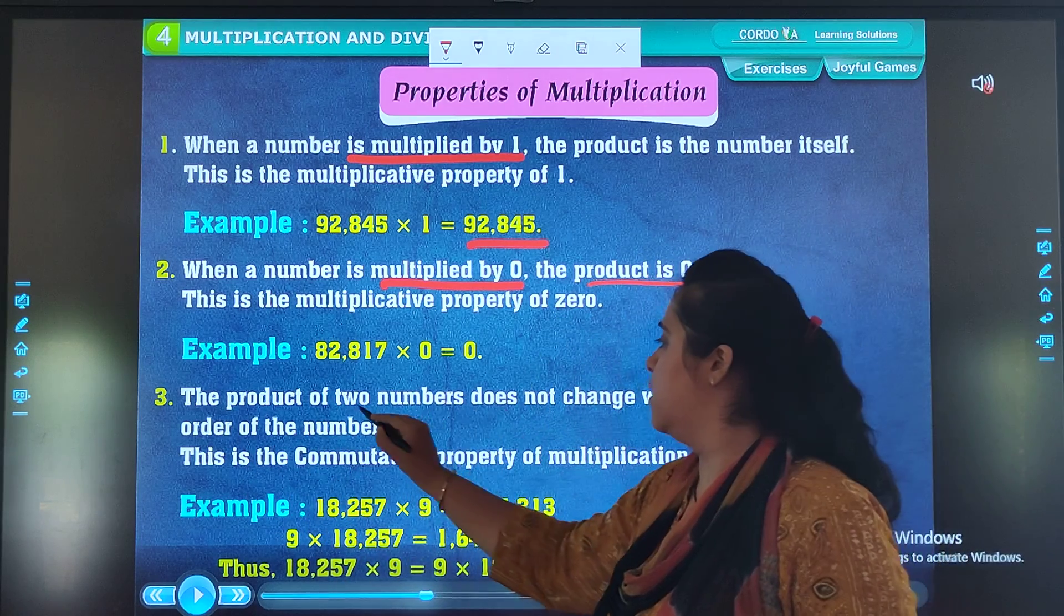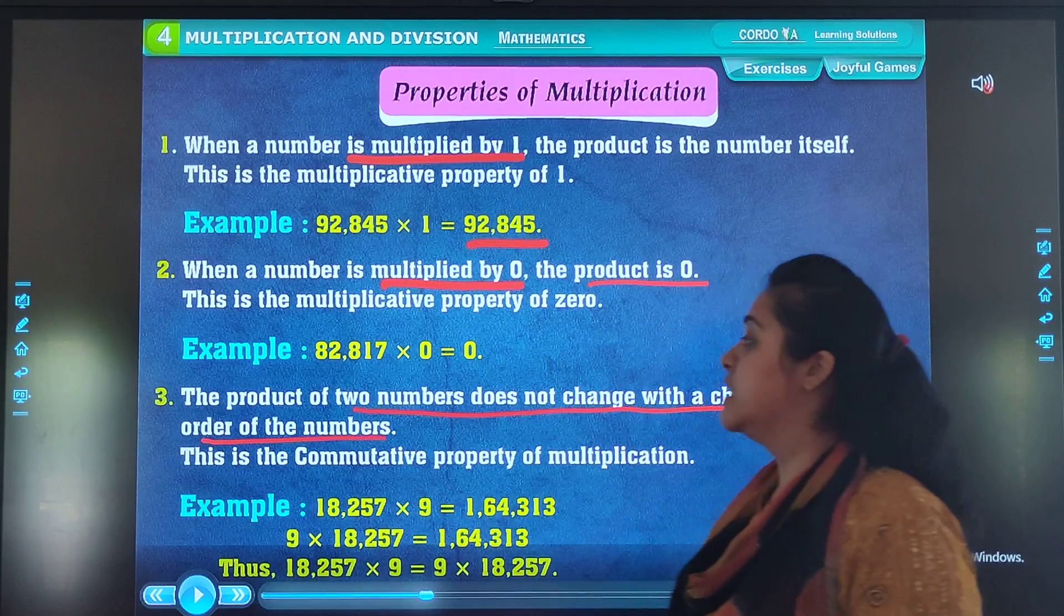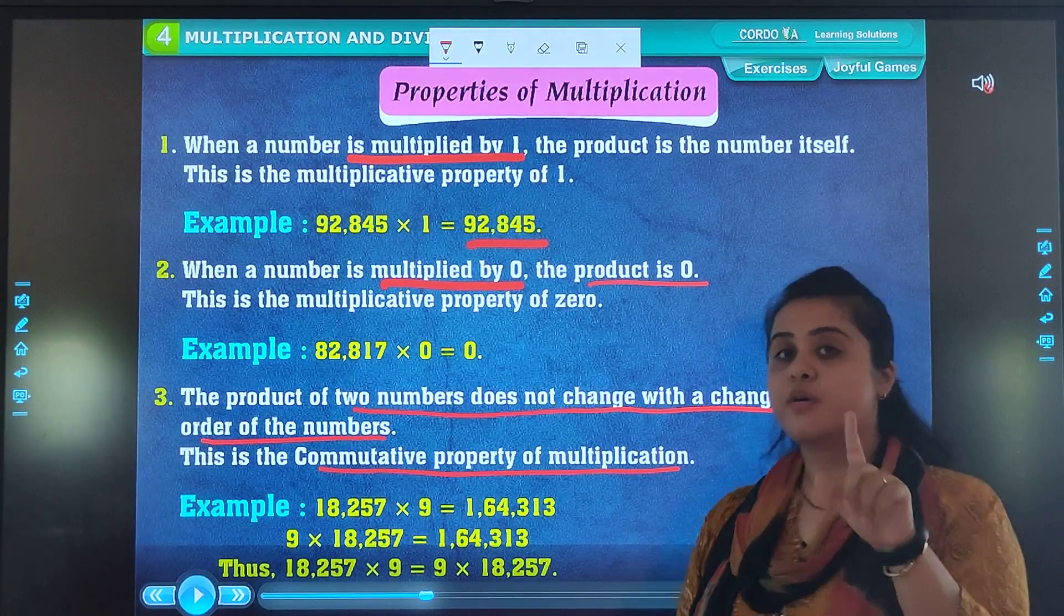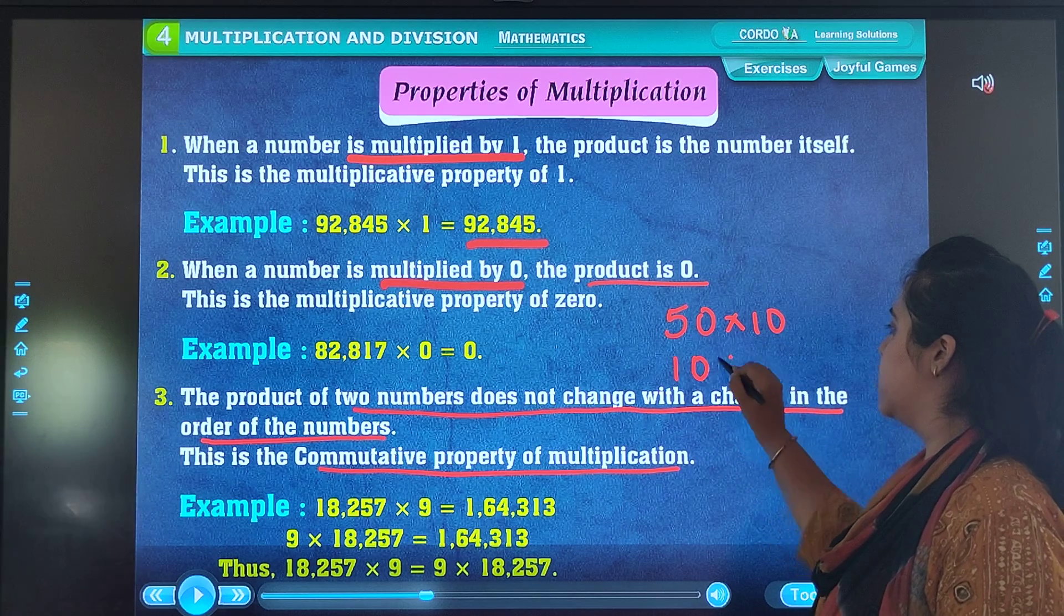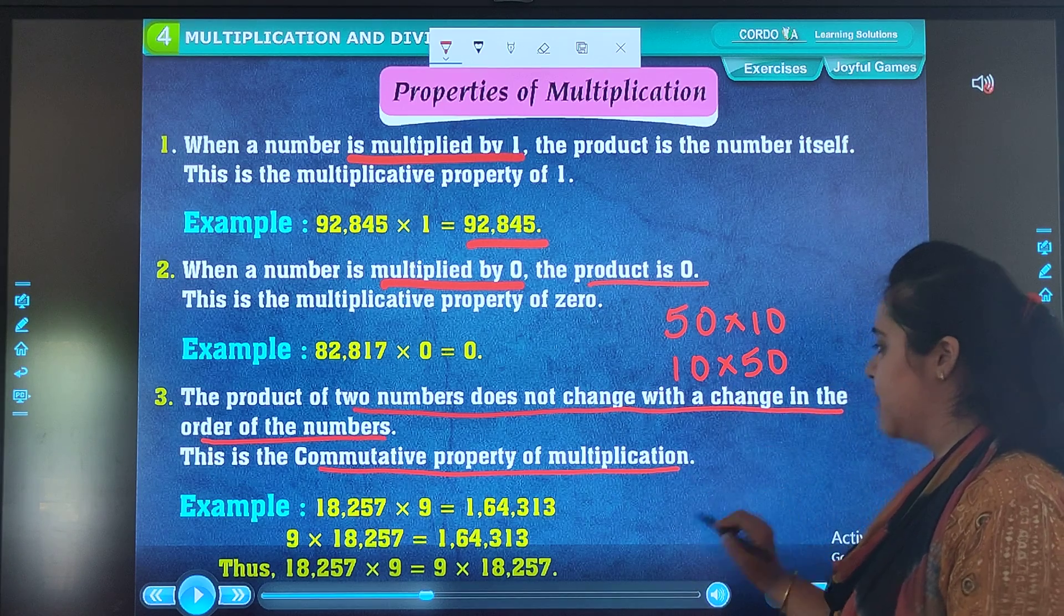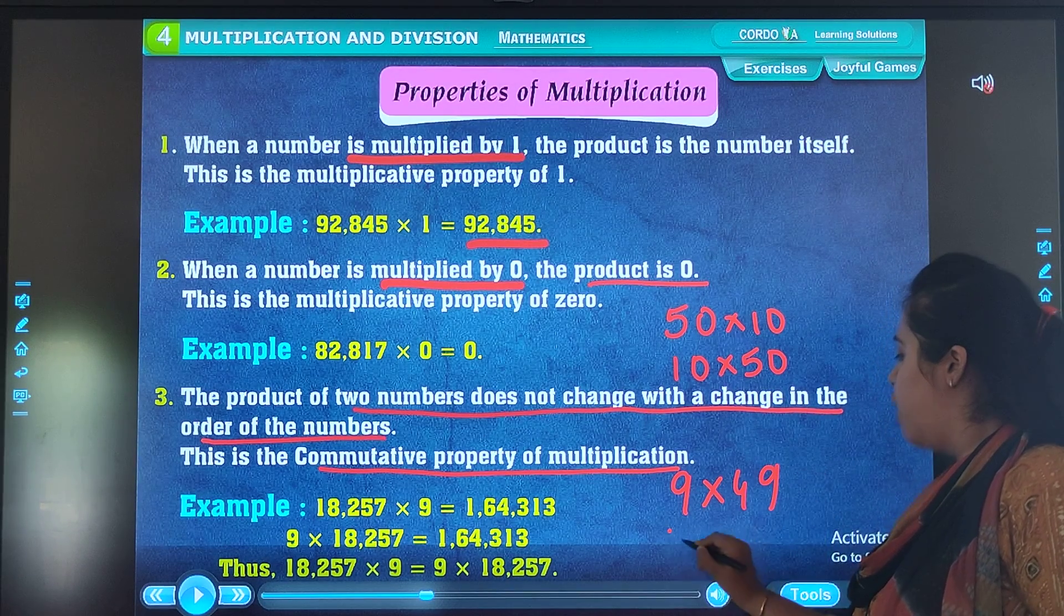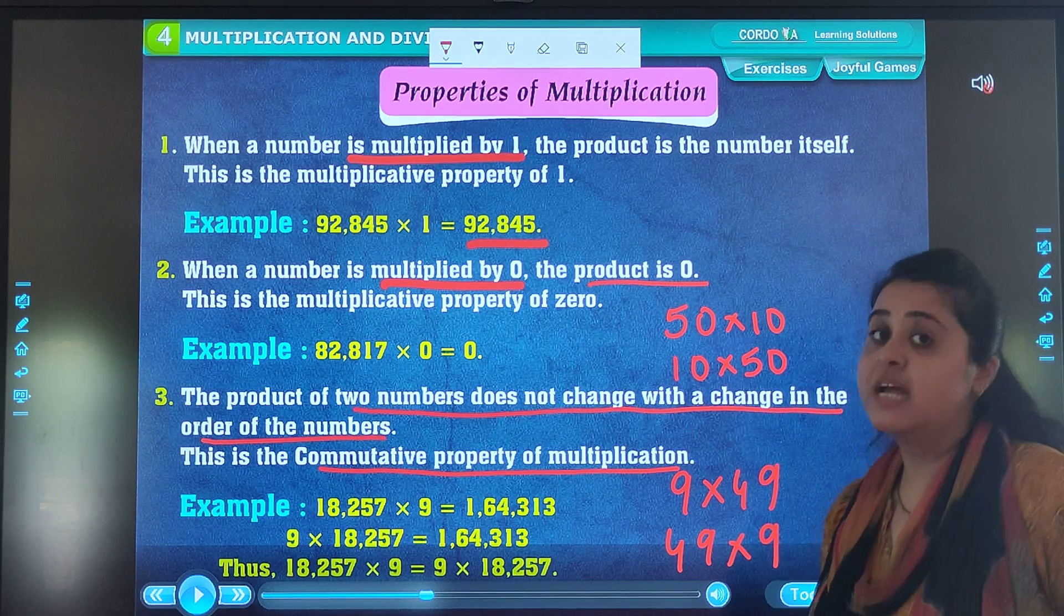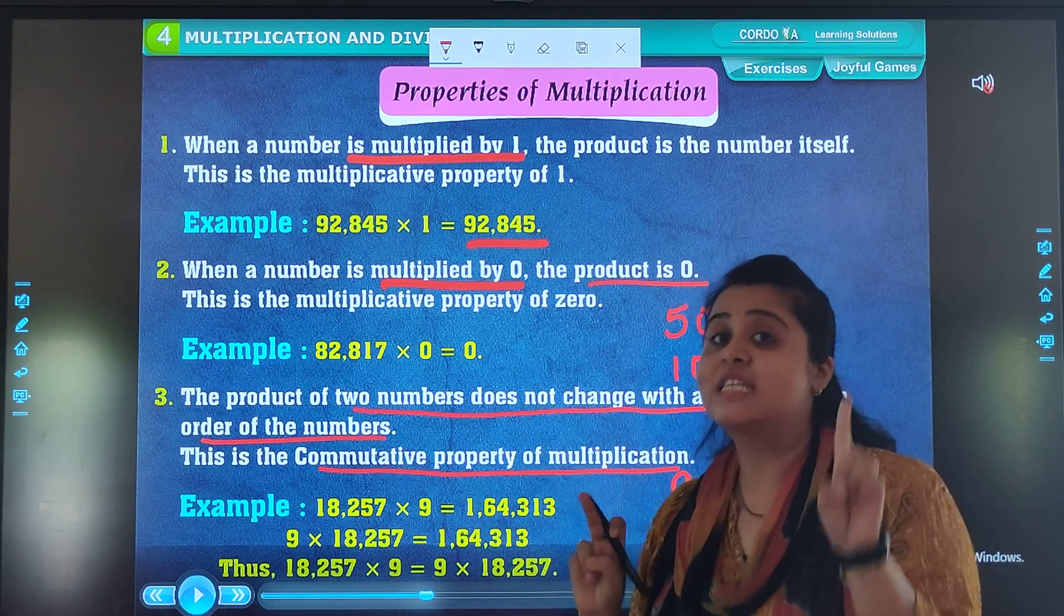The product of 2 numbers does not change with the change in the order of the numbers. This is the commutative property of multiplication. For example, if you multiply 50 into 10 or 10 into 50, it's the same thing. Here I am doing some other examples. For example, if you multiply 9 into 49 or 49 into 9, the answer will be same. That means that if you change the order, it will not affect the answer.